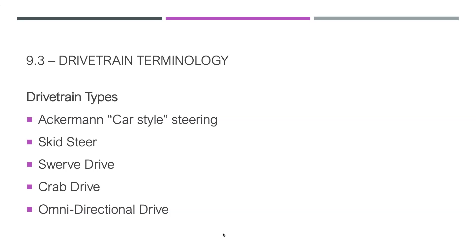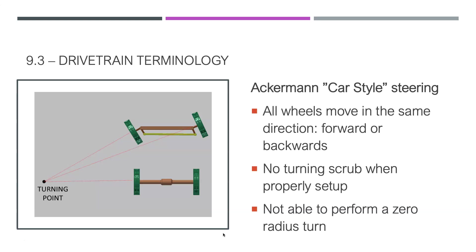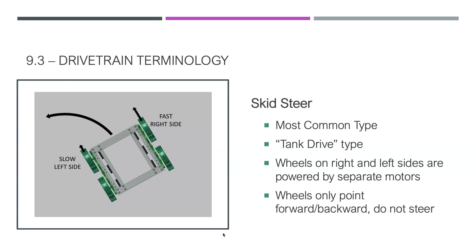There are five different types of drivetrains. The first is Ackermann car-style steering, where all wheels move in the same exact direction — either forward or backward. There is no turning scrub when properly set up, but it is not able to perform a zero-radius turn. For our purposes, a zero-radius turn would be very useful given the size of our field.